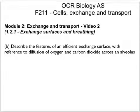In this video, we'll describe the features of an efficient exchange surface with reference to diffusion of oxygen and carbon dioxide across an alveolus. The human body has a pair of lungs which are exchange surfaces to allow diffusion of oxygen into our bloodstream and diffusion of carbon dioxide out of our bloodstream. We inhale and exhale through our nose and mouth, and the air that we inhale goes into our throat and down a tube called the trachea.